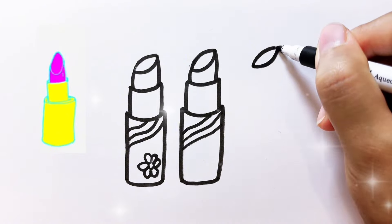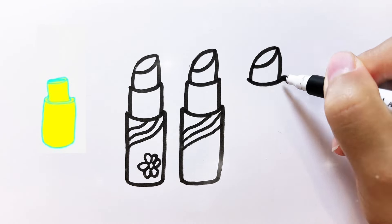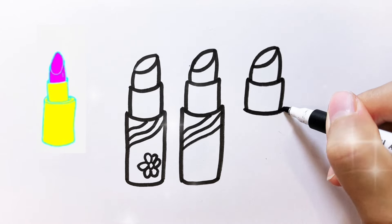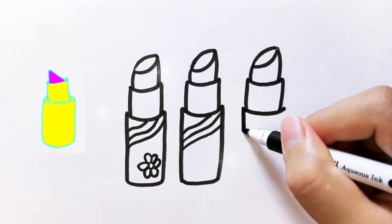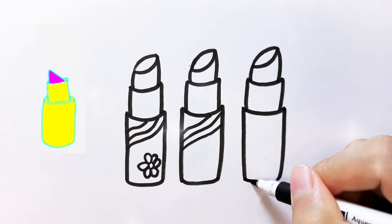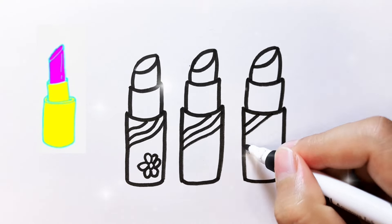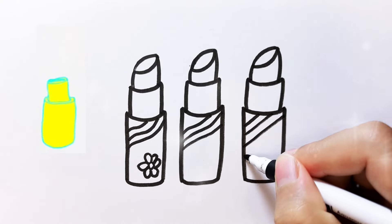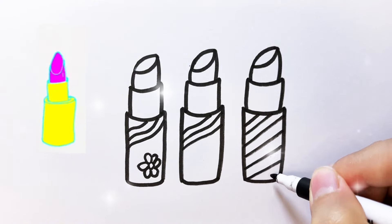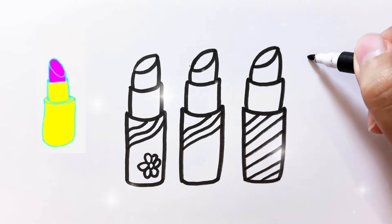A, B, C, D, E, F, G, H, I, J, K, L, M, N, O, P Q, R, S, T, U, V W, X, Y, and Z. Now I know my ABCs, next time won't you sing with me?